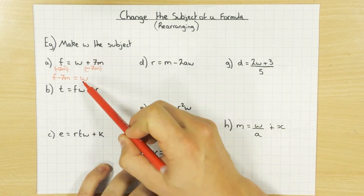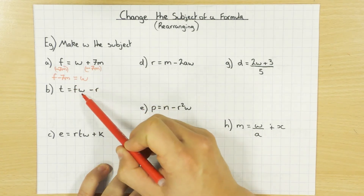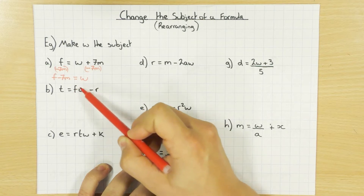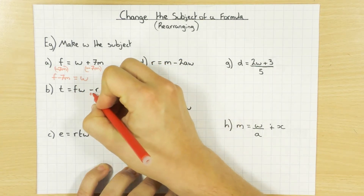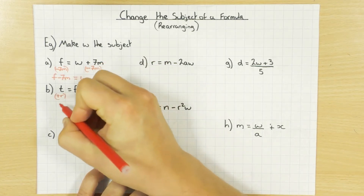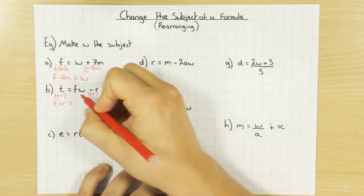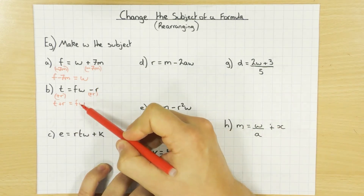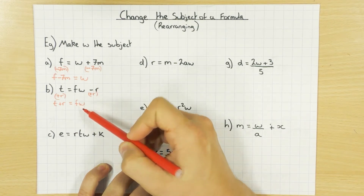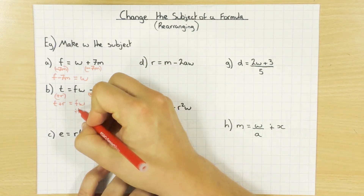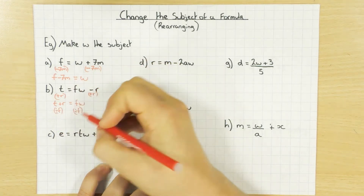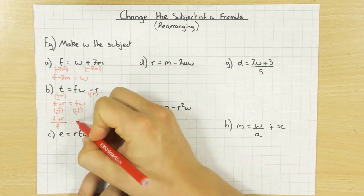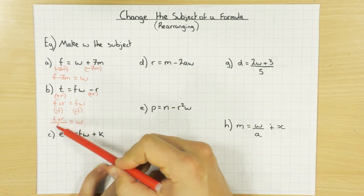Same thing here. I want to have W on its own, so I have a look where it is. It's on the right hand side and I've got this minus R and this F. Just like solving equations, you deal with this bit first because the F is tied up with the W. I'll deal with the minus R by doing the opposite and adding R to both sides. So I'm left with T plus R on the left and FW on the right. FW just means F times W, so to get rid of that I do the opposite and divide by F — both sides — leaving T plus R all divided by F equals W.